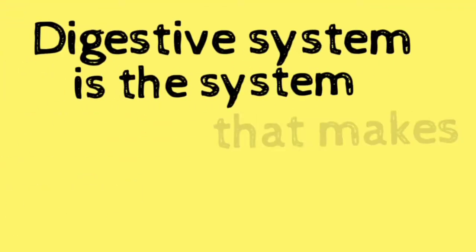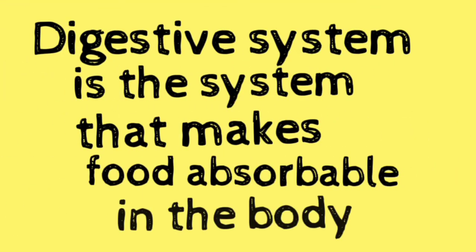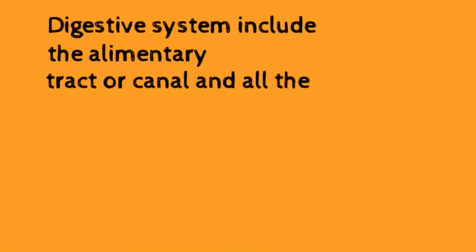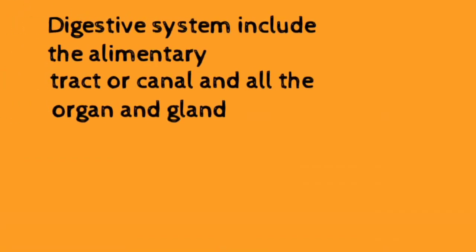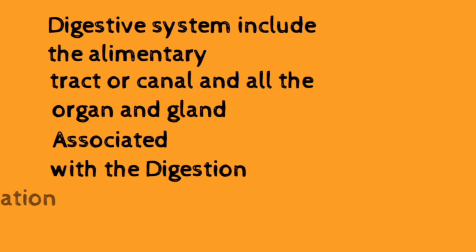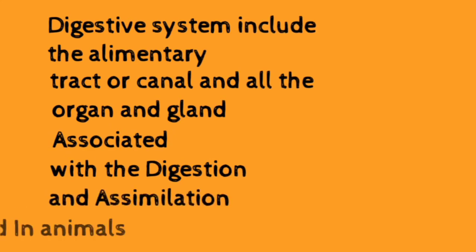The digestive system is a system that makes food absorbable in the body. It includes the alimentary canal and all of the organs and glands associated with digestion and assimilation of food in animals.